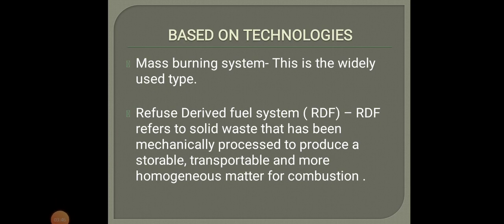The third type of classification is based on technology, divided into mass burning system and refuse derived fuel (RDF) system. The mass burning system is a widely used type of incinerator consisting of a reciprocating grate combustion system, a refractory-lined structure, and a water-walled steam generator. Normally they have two or three chambers with a capacity of 50 to 100 tons per day.